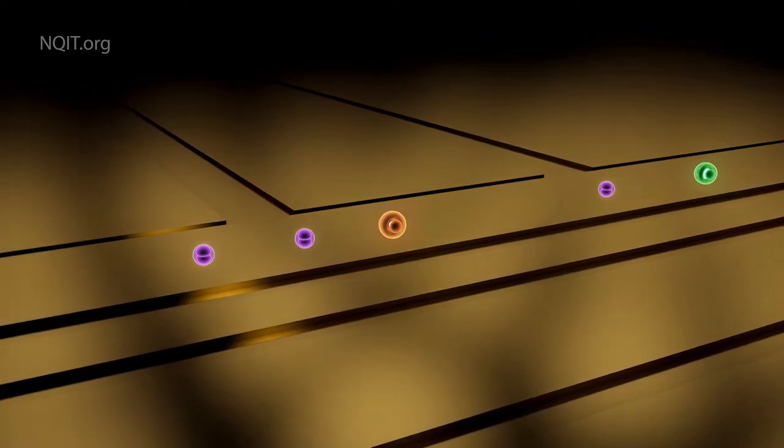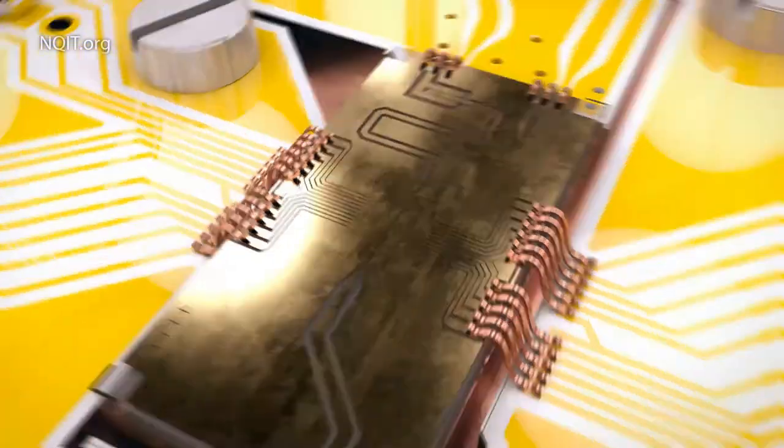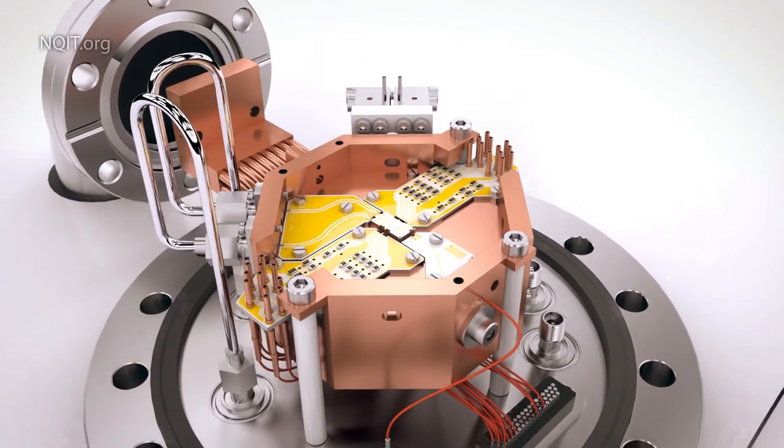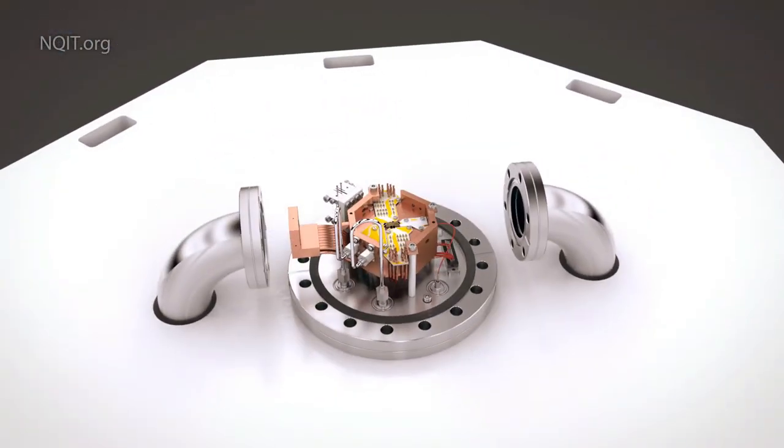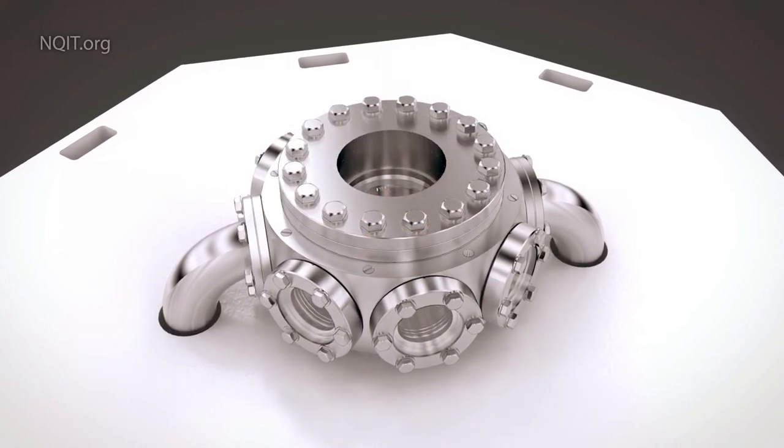Zooming out further we see the gold strips are part of a small chip called an ion trap and then we see surrounding electrical and cooling systems. A final zoom reveals the entire system is encased in a vacuum chamber which protects it from the atmosphere.